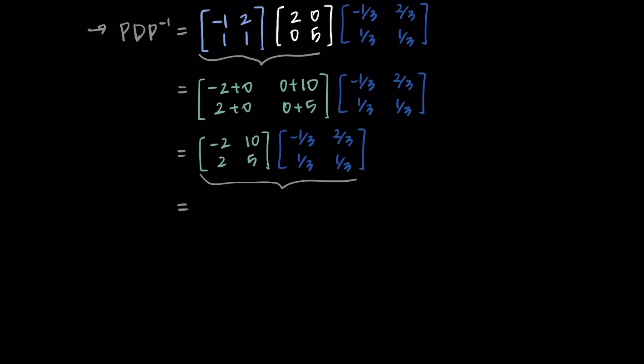There's some fractions here, but it should work out nicely. For my first row, I'm getting 2/3 plus 10/3, and then negative 4/3 plus 10/3. In the second row, I'm getting negative 2/3 plus 5/3, and then 4/3 plus 5/3.